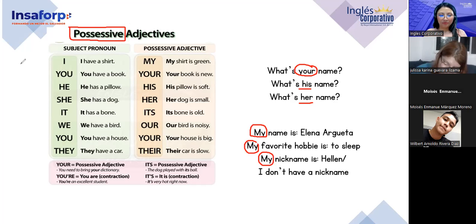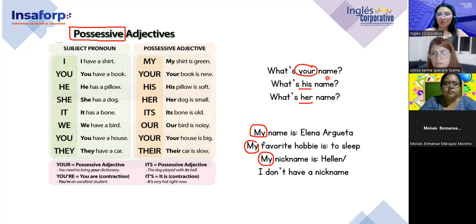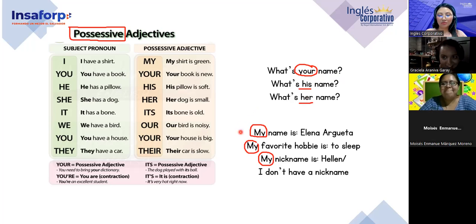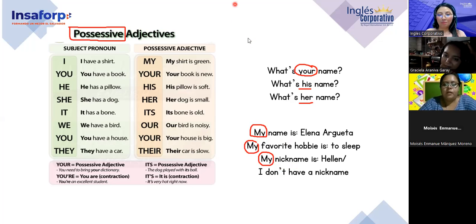Por ejemplo: 'what's your name' — de quién queremos averiguar el nombre. El nombre que le pertenece a quien le estoy preguntando — 'your'. 'What's his name' — el nombre de él. 'What's her name' — el nombre de ella. Y acá: 'my name is', 'my favorite hobby' — my, el nombre o el hobby que me pertenece a mí.